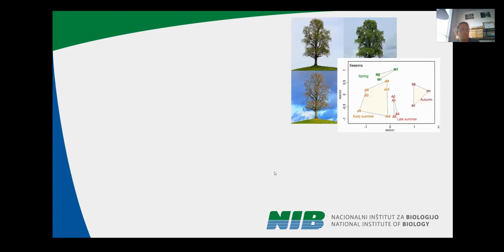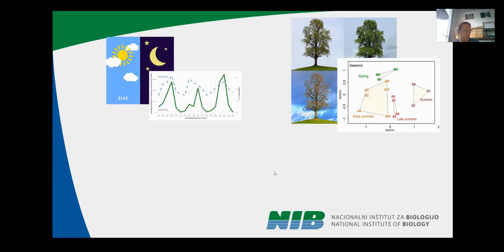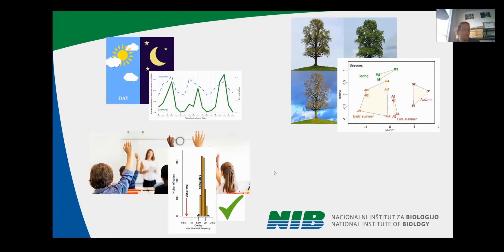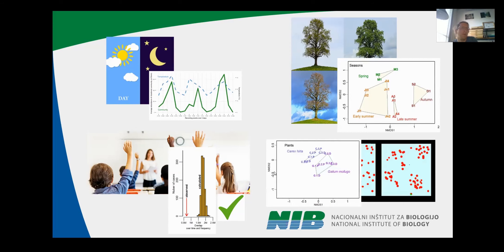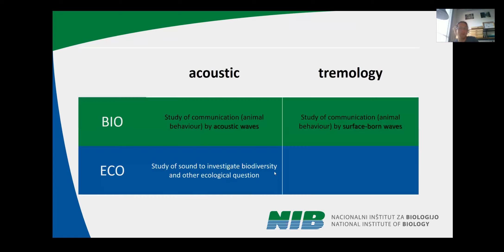To quickly sum up: we checked and observed seasonal changes; we also observed daily changes over day and night; we figured out that short temporal coordination of animals is present in nature; and we showed spatial distribution of different vibroscapes on different plant species.